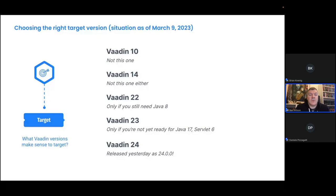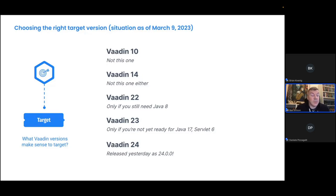The only reason you might not go for Vaadin 24 is if you aren't ready for some of the technologies it requires — at least Java 17 and Servlet 6. If you're on Spring Boot, you need to be on Spring Boot version 3. So if you're using OSGI or portlets and want to keep using them, you would not be ready for Vaadin 24 and should be targeting Vaadin 23, because portlets and OSGI are not ready for Vaadin 24 yet.